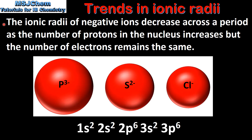Next we look at negative ions. The ionic radii of negative ions decrease across a period as the number of protons in the nucleus increases but the number of electrons remains the same. Here we have the phosphide ion, the sulfide ion and the chloride ion. They all have the same electron configuration and the same number of electrons. The phosphide ion has 15 protons pulling on 18 electrons, the sulfide ion has 16 protons pulling on 18 electrons, and the chloride ion has 17 protons pulling on 18 electrons. So once again this explains why ionic radii decrease across a period.